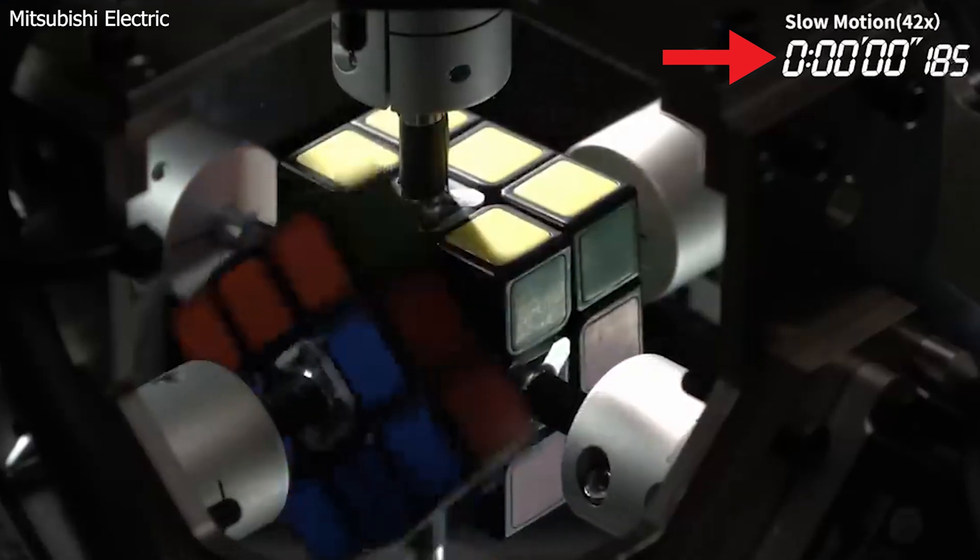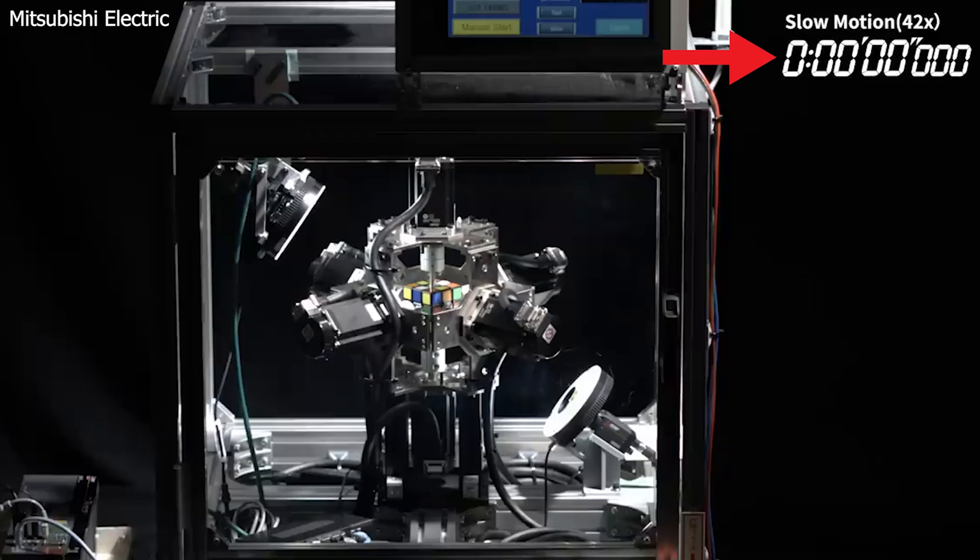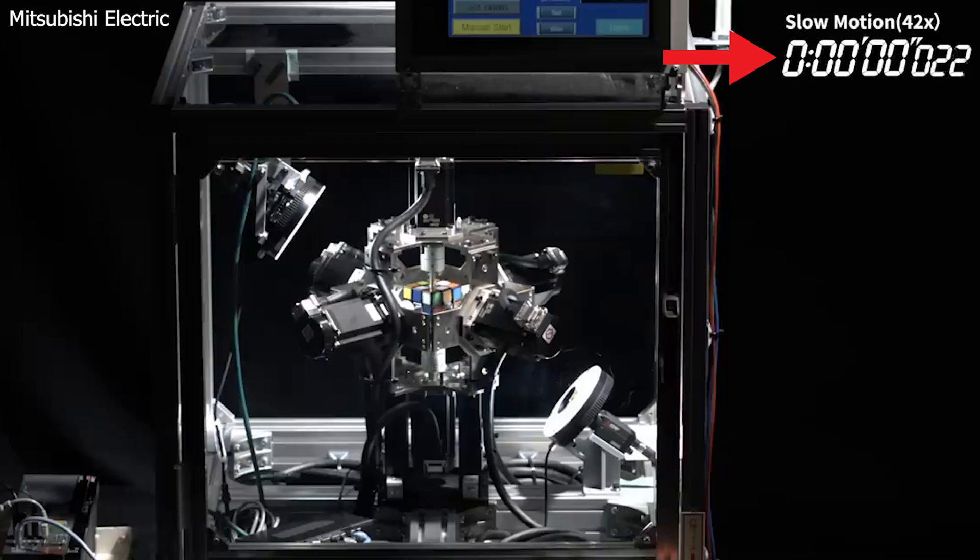Just for some perspective, the human record for solving a Rubik's Cube is 3.13 seconds, set by US champion cuber Max Park in 2023.